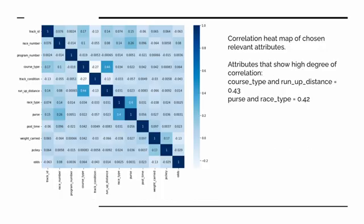This is a correlation heatmap of the relevant features. We noticed that there isn't large or discernible correlation amongst the attributes except for two. One is course type with run-up distance, which makes sense because muddy or sloppy course types may require a horse to run a longer distance. We also observed race type correlated with purse, which intuitively makes sense because the most prestigious races have a larger purse whereas maiden races don't.